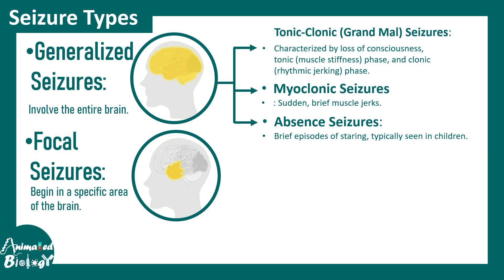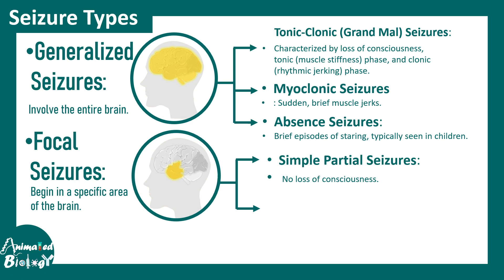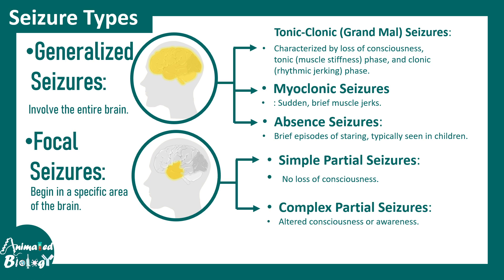Focal seizures affect a specific brain region. Subtypes include simple partial seizures, where there is no loss of consciousness, just a brief moment of jerking, and complex partial seizures, which involve altered consciousness and awareness and are more severe. These seizures are classified based on their severity and region of occurrence.